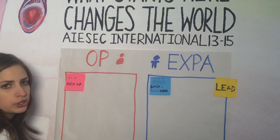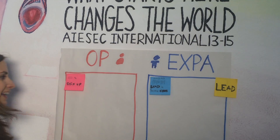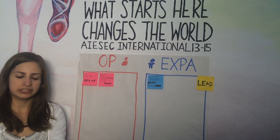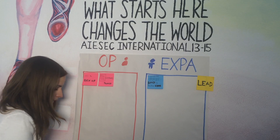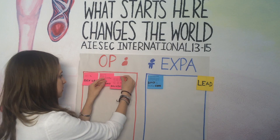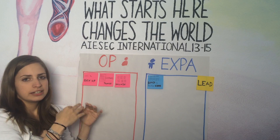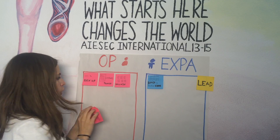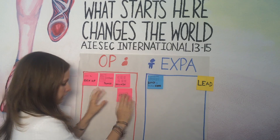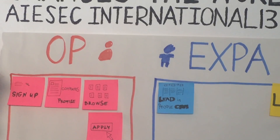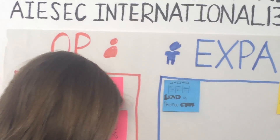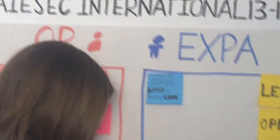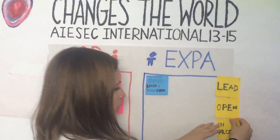Then the person continues and they complete their profile. Once they have completed their profile, they are able to browse opportunities in the Opportunities Portal. They see several opportunities and the one they like they click on apply. By this time they already became 'open', and once they clicked on apply they become 'in progress'.